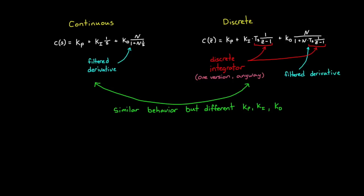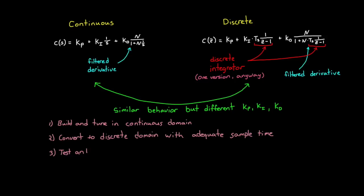So a typical approach to tuning a discrete PID controller is to first tune it in the S domain, and then convert it to the Z domain, while ensuring that the sample time is fast enough to keep the same behavior. Then you can implement this discrete PID controller on your digital computer and be confident that it will behave the way that you want.